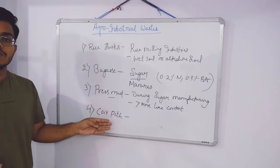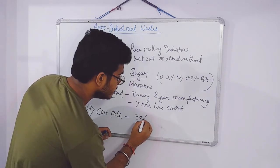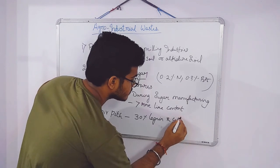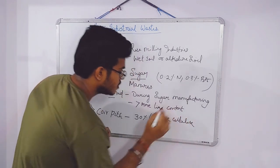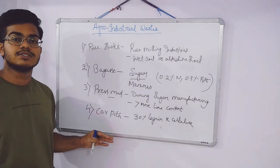Coirpith is very useful because it contains more amount of lignin. It contains about 30% of lignin and cellulose. This lignin and cellulose are very important for the physiological conditions of soil.